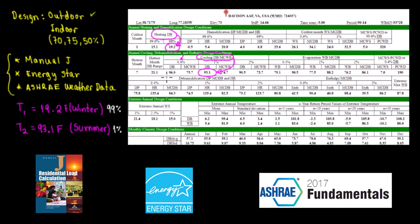Here's a trick to remember the 99th percentile and 1% — you always have to think 'above.' For the 99th percentile heating value, there is a 99% chance the temperature will go above that number. For the 1% summer value, there is only a 1% chance the temperature will go above that design temperature.